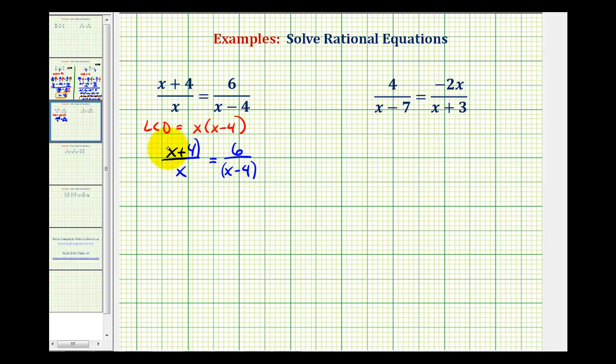I'm going to put these in parenthesis here. Now we're going to multiply both sides of the equation by this expression. So we'll have x times the quantity x minus 4 over 1 times x times the quantity x minus 4 over 1.